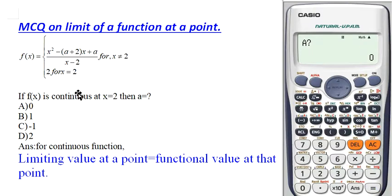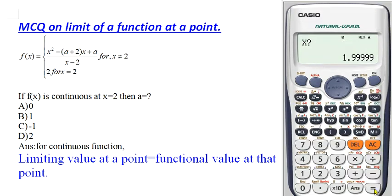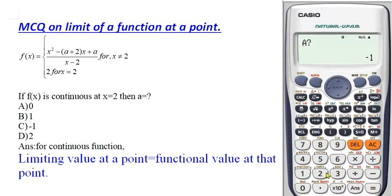Let me check the next options. Keeping x = 1.999 and testing option B (a = 1), the limiting value becomes very large — not equal to the functional value of 2. Testing option C (a = −1), the limiting value is again not equal to 2. Testing option D, the result is also much larger than 2. So options B, C, and D are all incorrect.